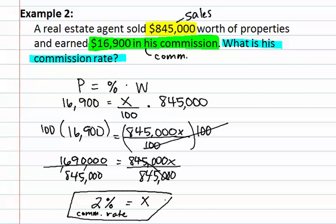Remember when doing commission problems that it follows the same pattern: the part equals the percent times the whole, where the part is the commission, the percent is the commission rate, and the whole is the price or sales that you made. Also remember that when looking for the percent, to always place your x over 100.